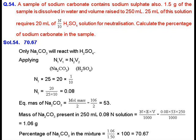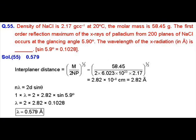We get the mass of Na₂CO₃ as 1.06 gram. The percentage of Na₂CO₃ will be equal to its mass divided by total mass multiplied by 100, that is 1.06 divided by 1.50 multiplied by 100, which gives 70.67 percent. We are now going to discuss question number 55 from MTP4.